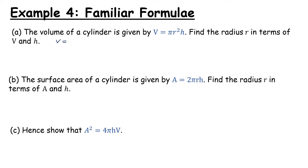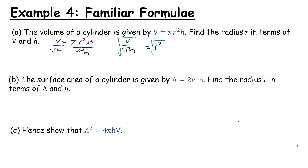Starting with v equals pi r squared h, we can see there's an r squared being multiplied by pi and h. So let's divide both sides by pi and h. The pi's cancel and the h's cancel, leaving us with v over pi h equals r squared. In the previous example, we had a square root which we got rid of by squaring. This time we're going to put a square root on both sides, because the square root of r squared will just leave me r.